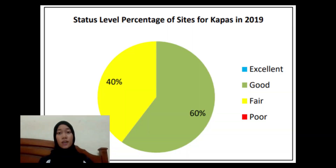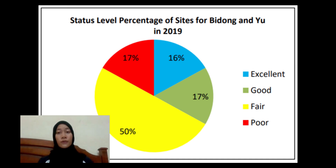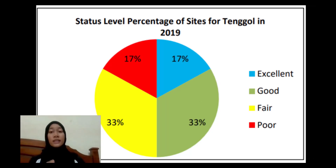A total of 5 coral reef sites were surveyed in Kapas, where 60% of the reef were in good condition and 30% were in fair condition. A total of 6 coral reef sites were surveyed in Bidung and Yu, where 50% of the reef were in fair condition. A total of 6 coral reef sites were surveyed in Tenggur and 17% of the reef were in excellent condition, 33% in good condition, 33% in fair condition, while the remaining were in poor condition.